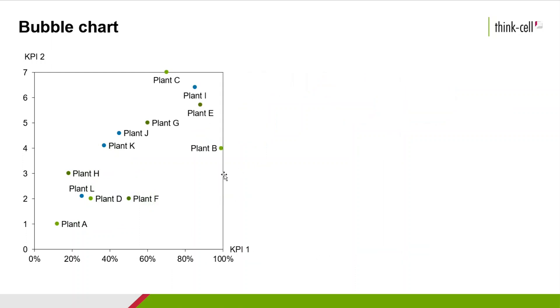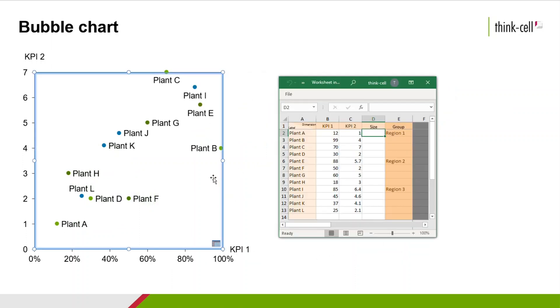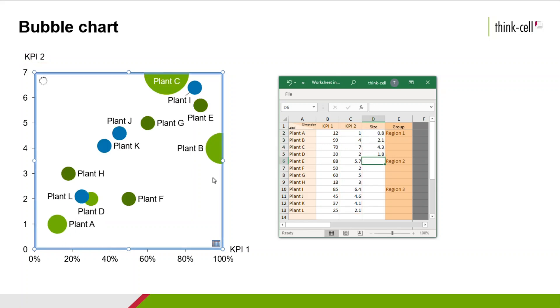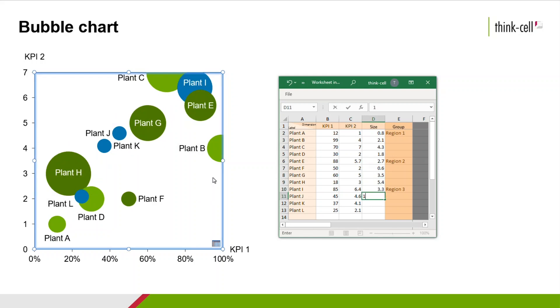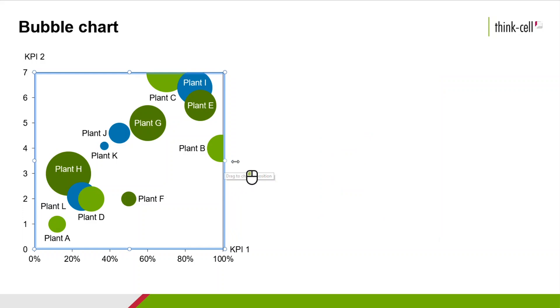So, double-click on the chart to open the datasheet. As the values for KPI 1 on the X and for KPI 2 on the Y axis are already inserted, start entering the annual revenue for each plant in the Size column. Resize the chart if necessary.